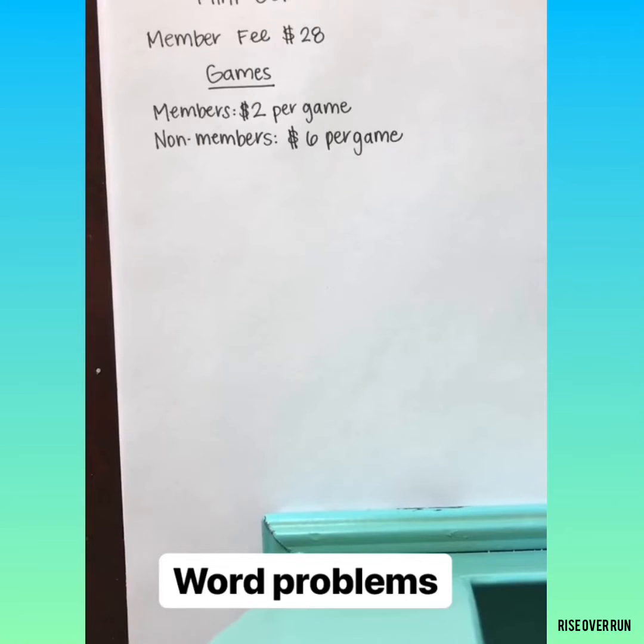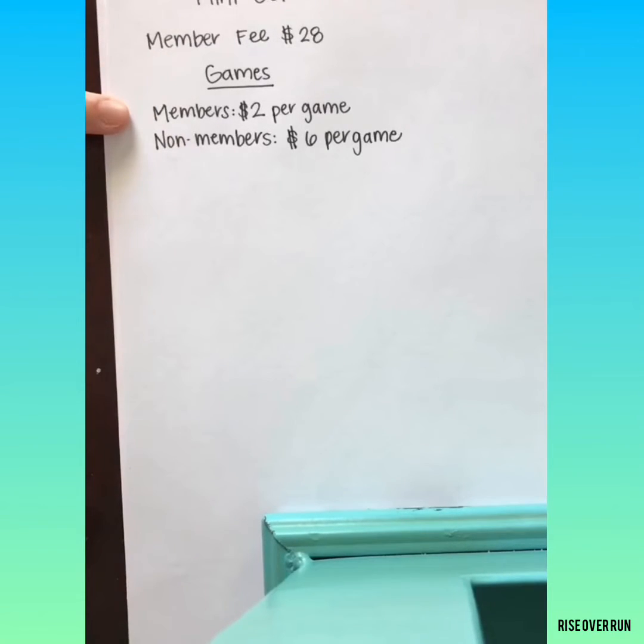Let's look at a word problem situation and how you can use a system of equations to solve. Let's say you love mini golf. If you want to pay to be a member, you can pay $28. And that will save you on games. Games for members cost $2. For non-members, they cost $6.